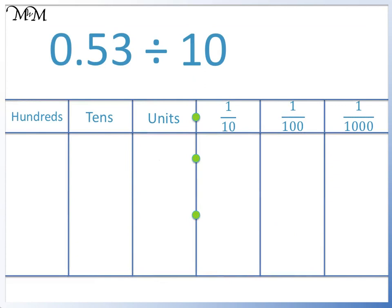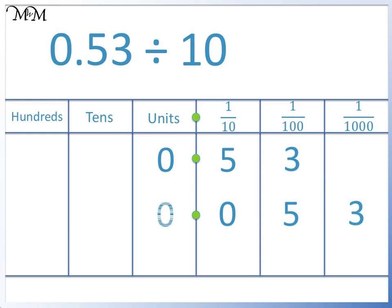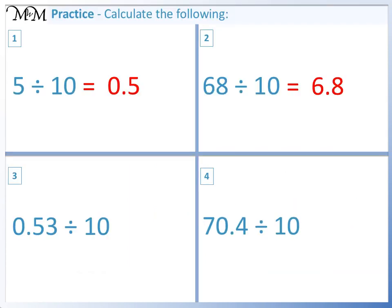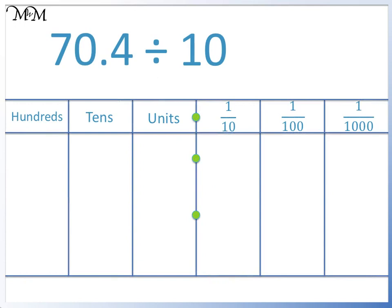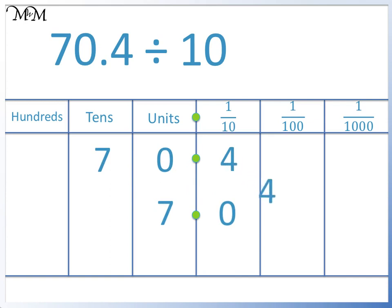Question 3: 0.053 divided by 10. We move each digit one place to the right — the zero to the tenths column, the 5 to the hundredths column, and the 3 to the thousandths column. There aren't any digits in front of the decimal point, so we write in a zero. Our answer is 0.053. Question 4: 70.4 divided by 10. We move the 7 to the units column, the zero to the tenths column, and the 4 to the hundredths column. Our answer is 7.04.